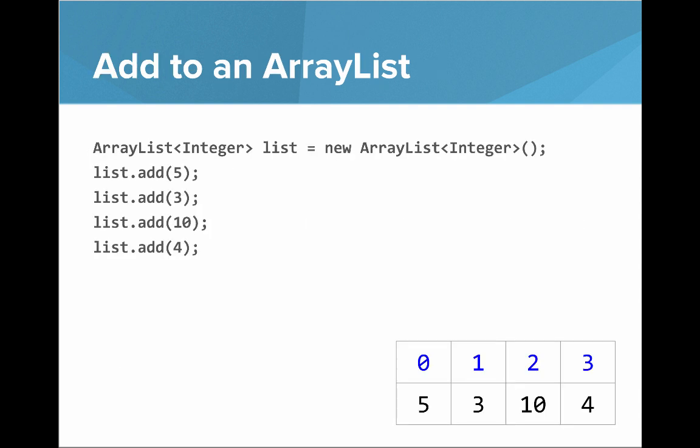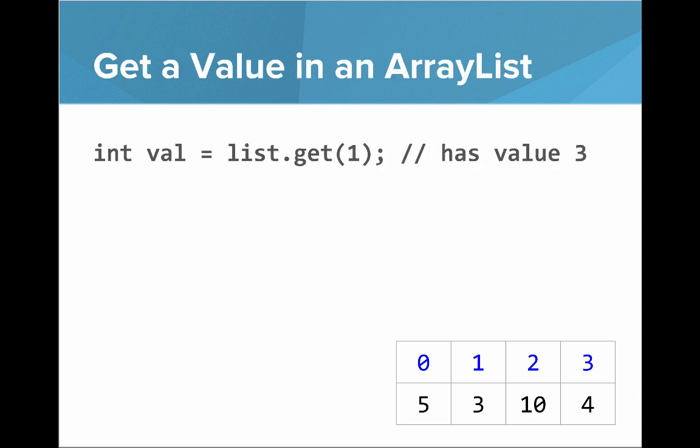Let's see how we add to an ArrayList. We'll make an ArrayList of integers called list, then say list.add. We'll add five, we'll add three, we'll add ten, we'll add four, and you can see what that resulting list will look like. There's an add method that lets you append an element to the end of your list.